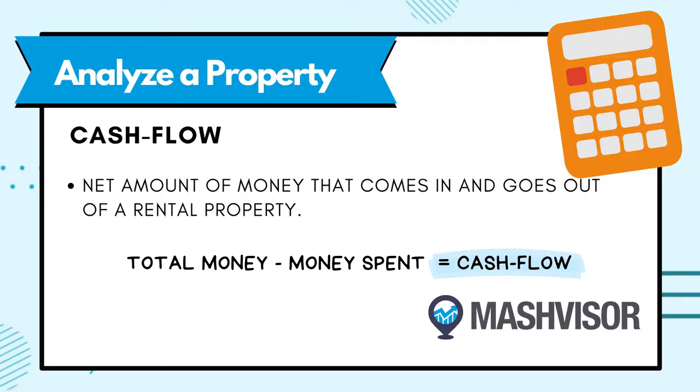The final stage in an investment property analysis is to analyze the rental property itself. Cash flow is the net amount of money that comes and goes out of a rental property. It's the difference between the total amount of money collected from rent and other sources and the total amount of money spent on operating expenses. Positive cash flow means that more money is coming in than going out, while negative cash flow indicates that there's more money being spent than being generated.